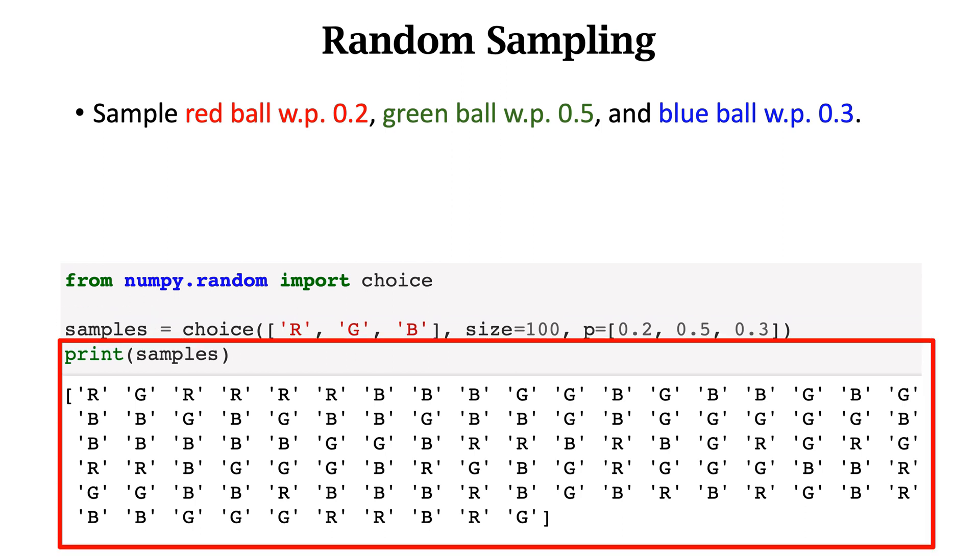Here I print the outcome of random sampling. All of the three colors can be chosen. If I execute the function again, the outcome will be completely different. In this and the upcoming lectures, random sampling is frequently used. You can recall this example when trying to understand random sampling.